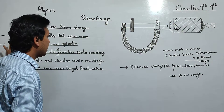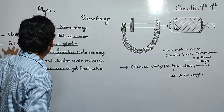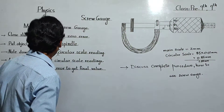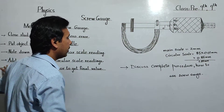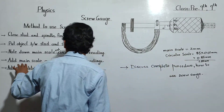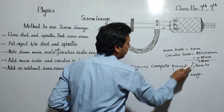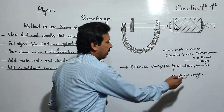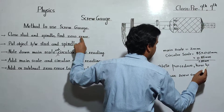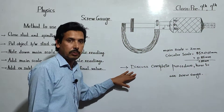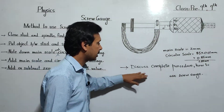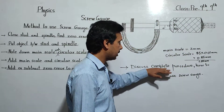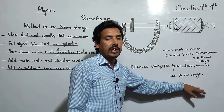Let me summarize all the steps again. First step: close stud and spindle and find the zero error. Second: open stud and spindle and put the object between them. Third: find the main scale reading and circular scale reading. Fourth: add the main scale reading and circular scale reading to get a result — but this is not the actual result yet. Finally, add or subtract the zero error from this result to get your actual final reading. I hope you understood the complete procedure for how to use the screw gauge to find radius, diameter, or thickness.